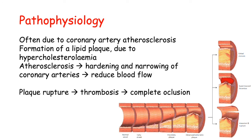As the plaque grows, the bigger the problem, because it can rupture — as seen in this image — leading to the formation of a blood clot, also known as a thrombus. If this happens, there can be a complete occlusion of the artery, and so the heart muscle will not receive oxygen or nutrients and will starve.